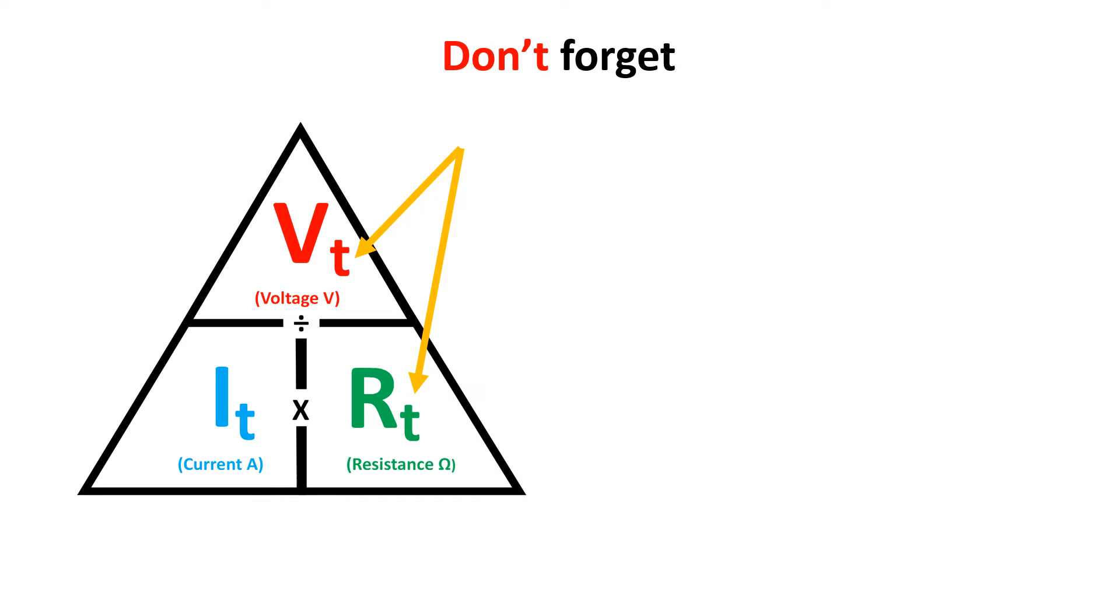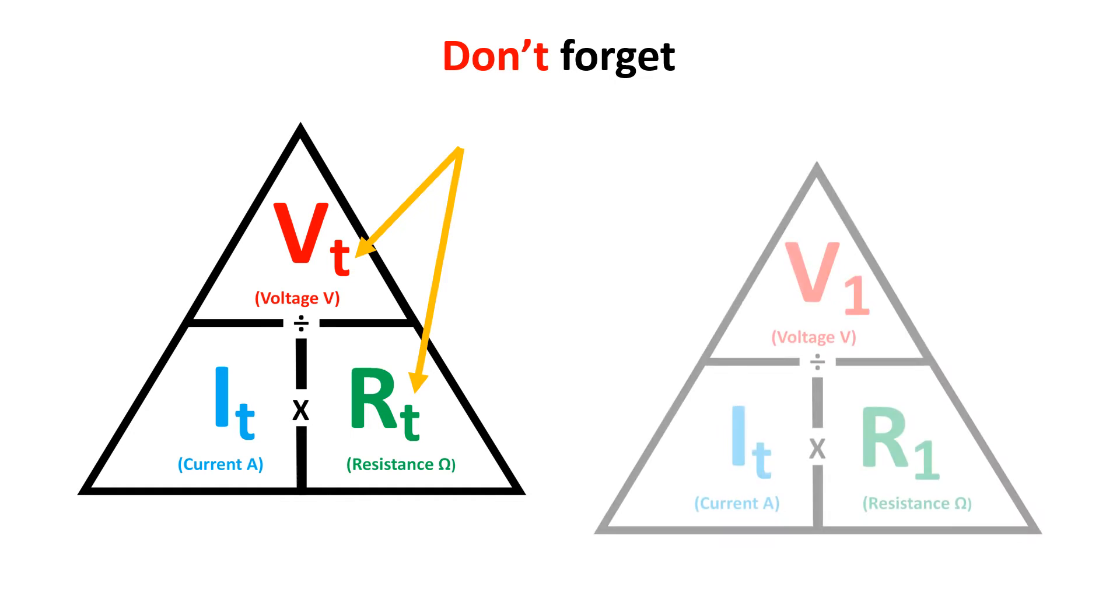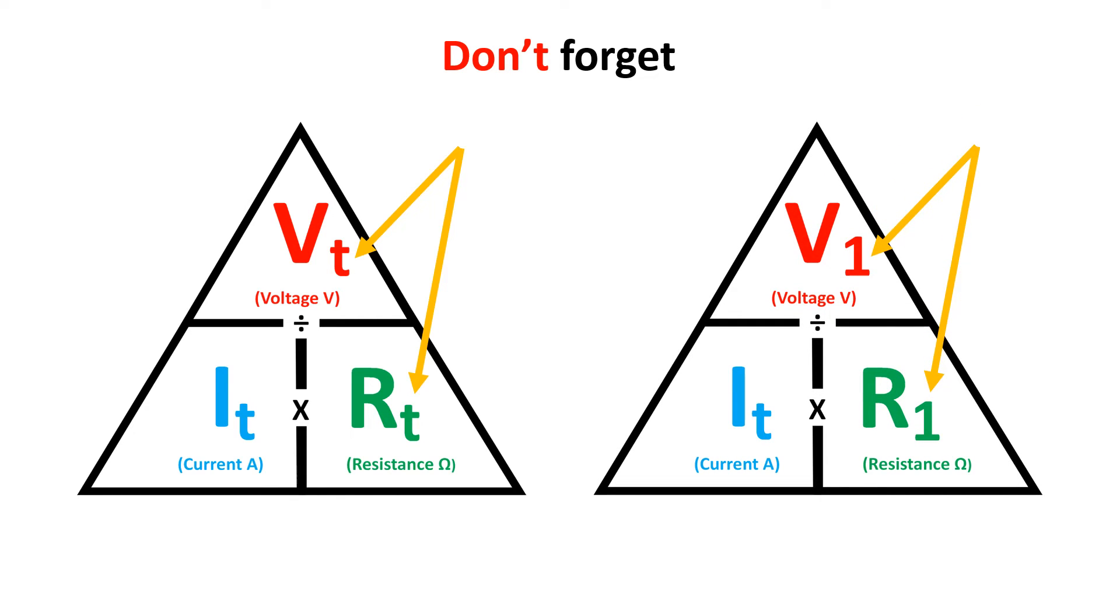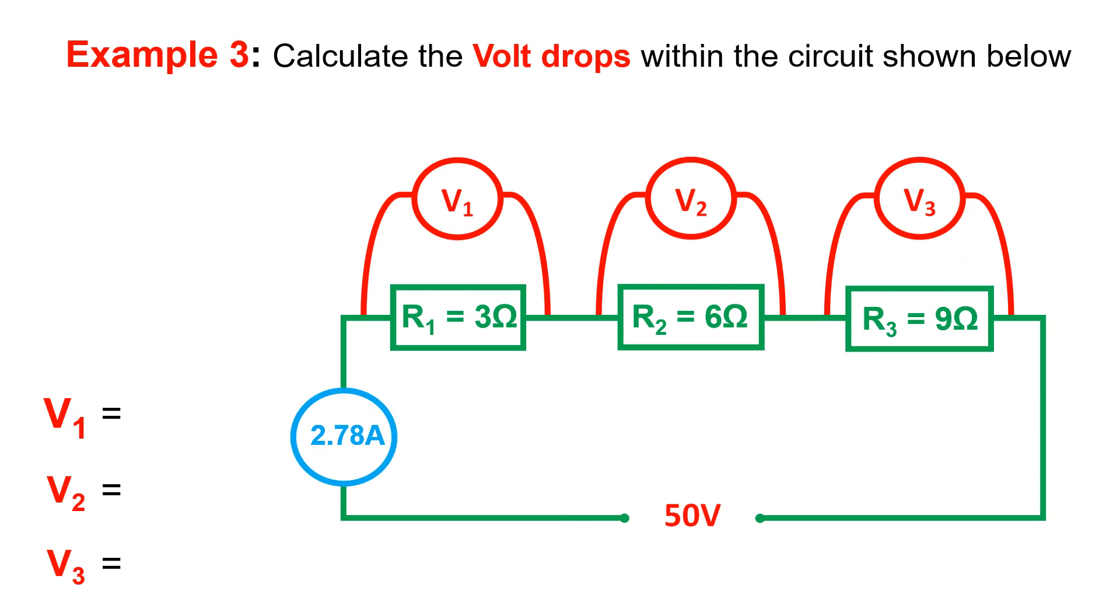If you look closely at the Ohm's law triangle we were using in the last example, you will notice that the subscript shows that we were using voltage total and resistance total to calculate current total. This is important to remember because now we will be using current total, as that does not change within the series circuit, and multiplying that with resistance 1 to calculate voltage 1. If we used resistance 2, then we would be calculating voltage 2, and so on. This means that once we have the current total, the IT, we can then use that to apply Ohm's law to each individual resistance and calculate the voltage drop across that resistance.